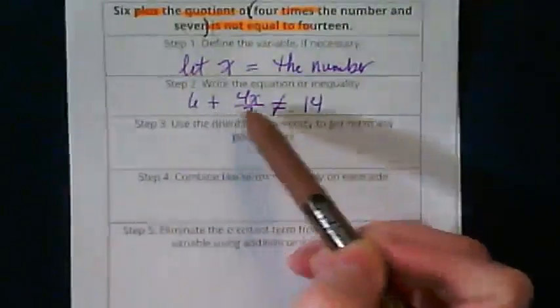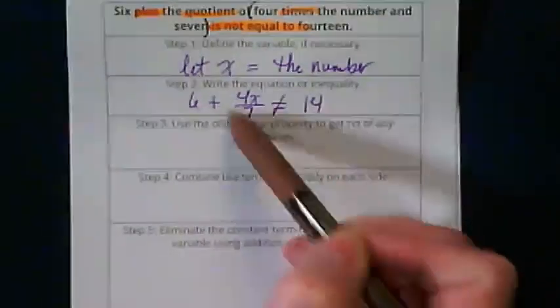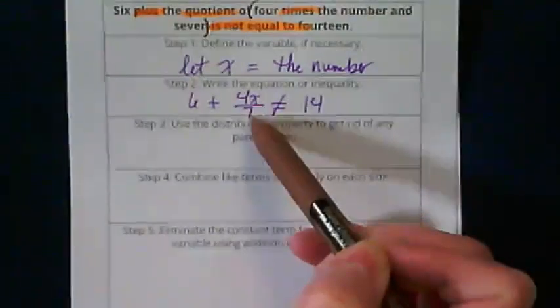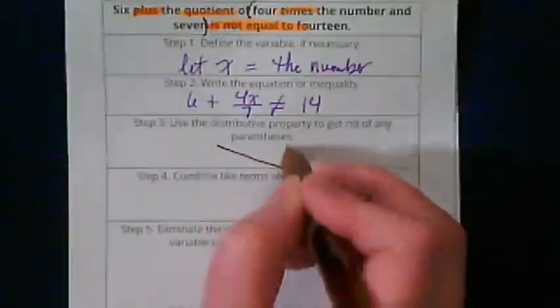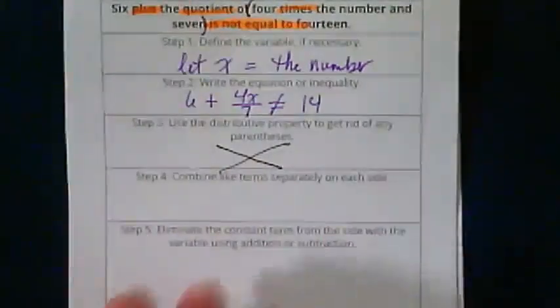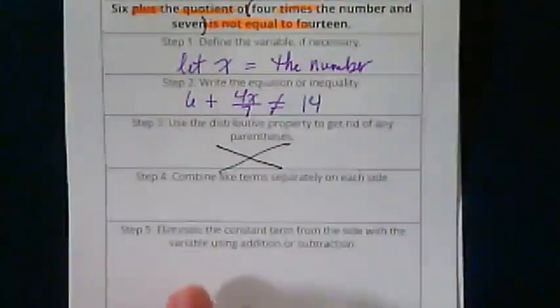We're doing 6 plus the quotient of 4 times the number and 7 is not equal to 14. We do not have any parentheses, no distribution has to happen, so no step 4 or 3.